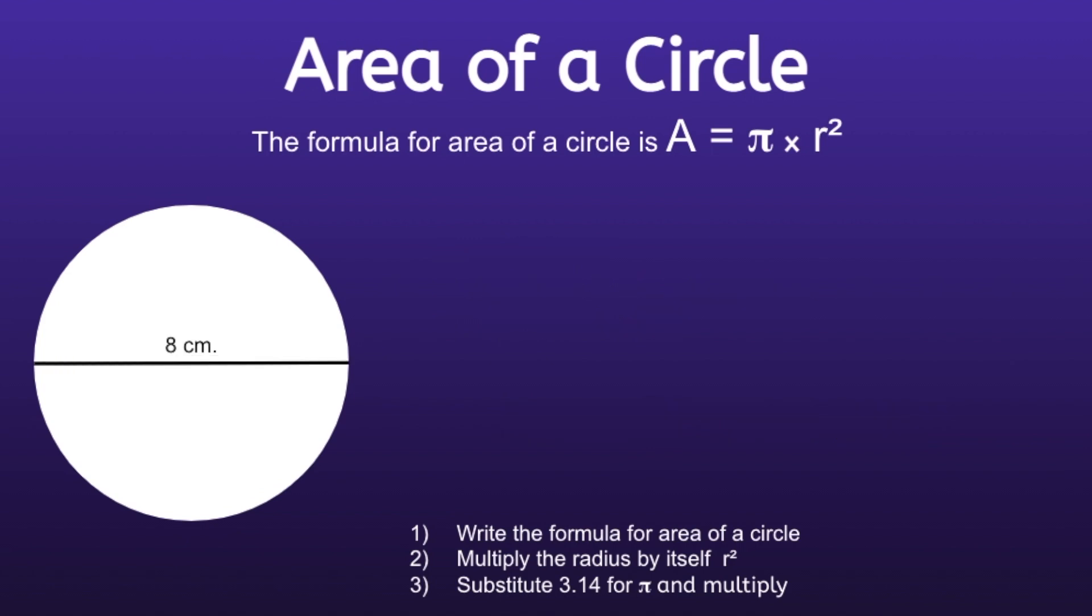Example number two. Step one is to write the formula for area of a circle. A equals pi times radius squared. Step two. Multiply the radius by itself. And this is the r squared in the formula.